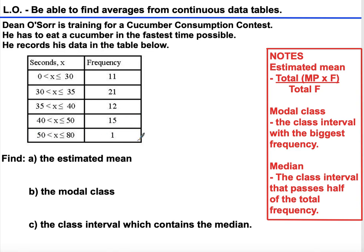The notes on the right inform you how to calculate the estimated mean, which is total MP times F divided by total F. We're going to use a midpoint because we don't know exactly how many seconds it took, but we know it's between 0 and 30, so the best estimate is halfway. We would say 0 plus 30 divided by 2 is 15, so we do 15 times 11.